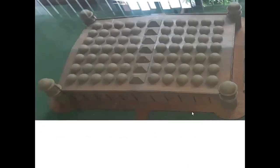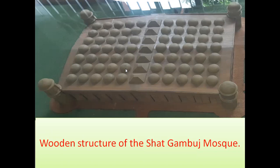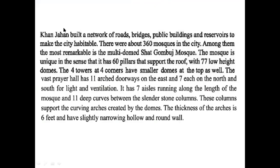Let's see a picture. This is the wooden structure of the Shatgombuj Mosque. You can see the roof — in one row there are seven domes. There are eleven rows, so seven times eleven equals 77 domes in total. At the four corners there are smaller domes — four smaller domes at four corners. And these are the doorways. Let's move to our next slide.